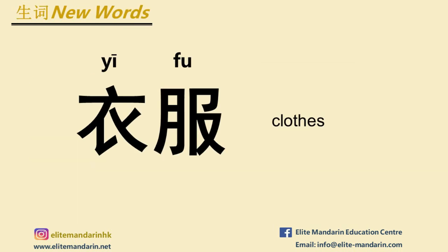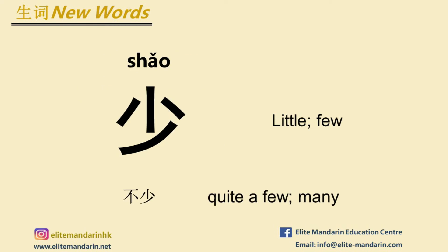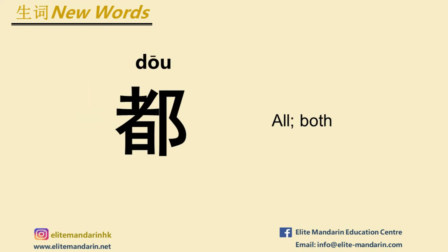Let's learn some new words for text 3. 衣服 — clothes. 漂亮 — beautiful, pretty. 少 — few, little. 不少 — quite a few, many. 这些 — these. 都 — both, all.